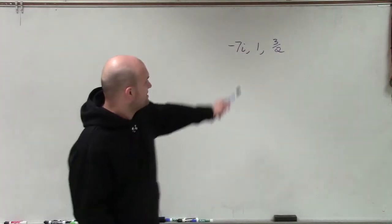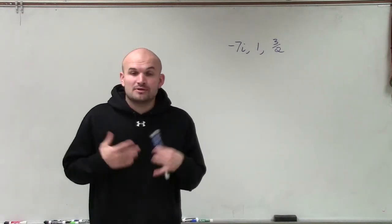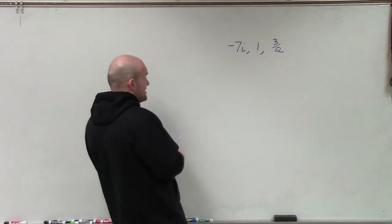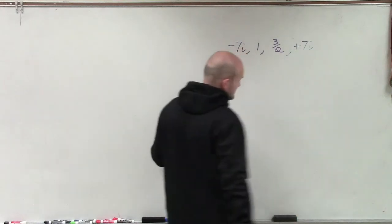Now again, what I need to do when I notice that I have an i or even a radical, I need to make sure I use the complex conjugate. So therefore, if negative 7i is a zero, that means also that positive 7i is a zero.